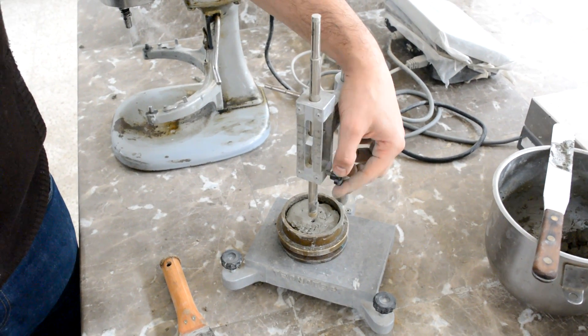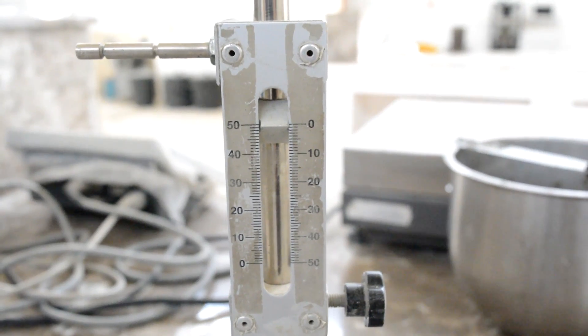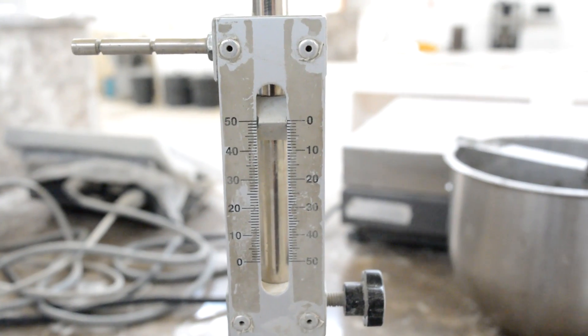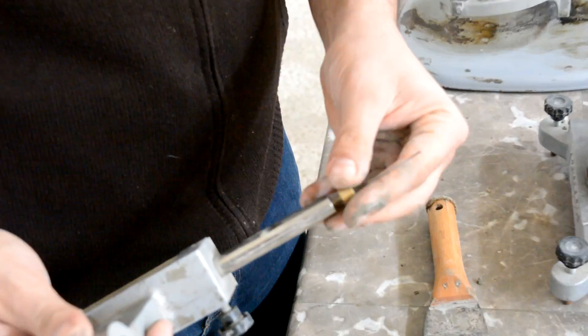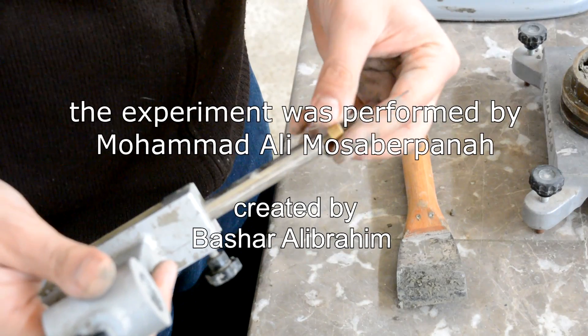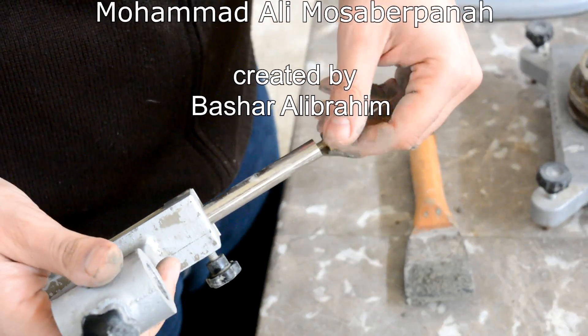Continue until the needle fails to penetrate the paste. The time between the initial contact of cement and water and when the thick needle fails to penetrate the paste is the final setting time. By that, we were able to determine the setting time of hydraulic cement by Vicat needle.